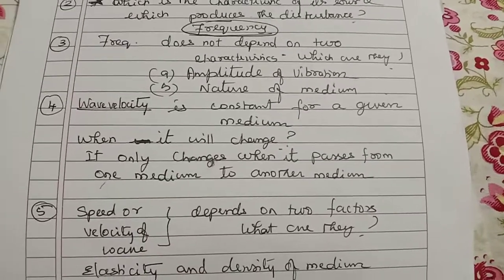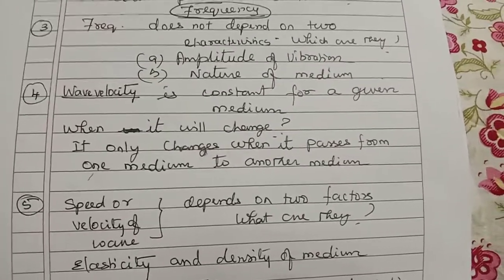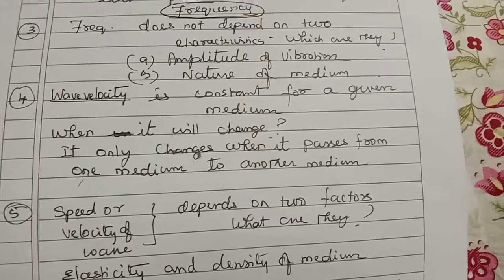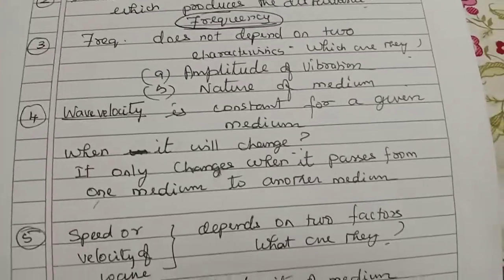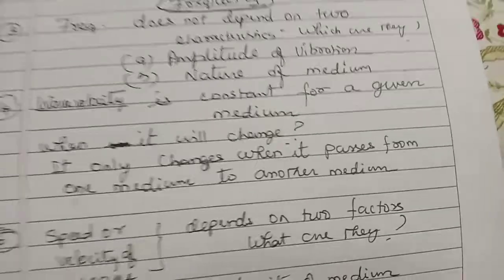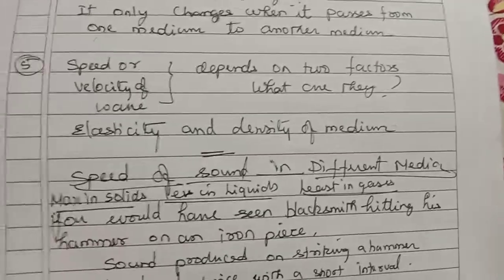Now let us come to the next point. Speed and velocity of wave depends on two characters: elasticity and density of the medium. Let us learn all these points together whenever you are preparing for the sound chapter. These points are important for one mark question level. Let us go to today's topic.